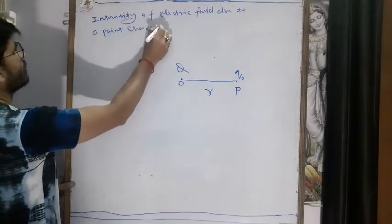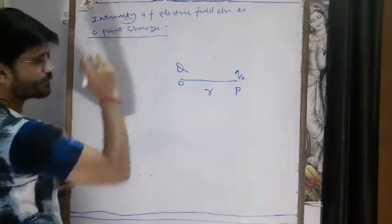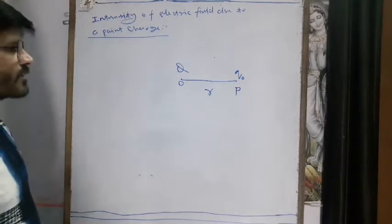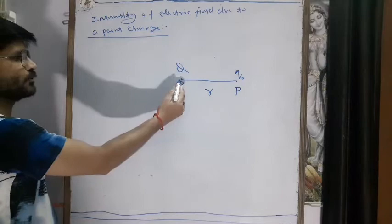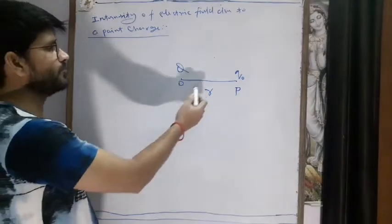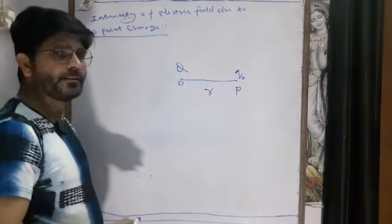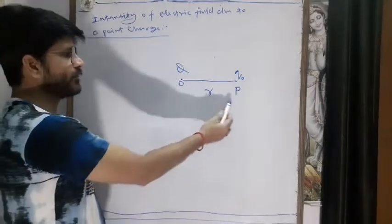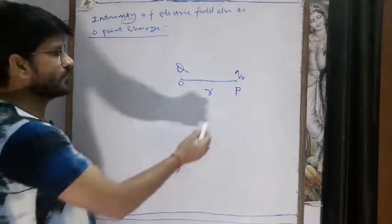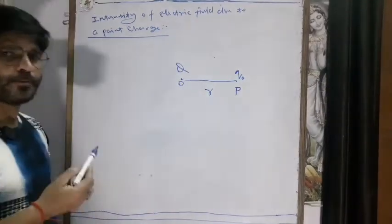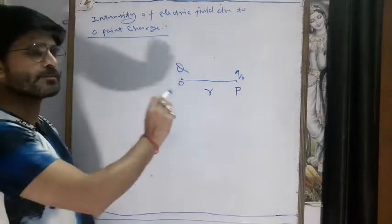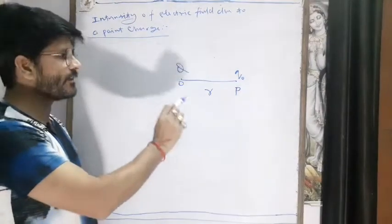A point charge Q is placed at point O, and a point P is situated at a distance R from the point charge Q where the electric field is to be calculated. For this, we have to put a positive test charge q naught at point P.